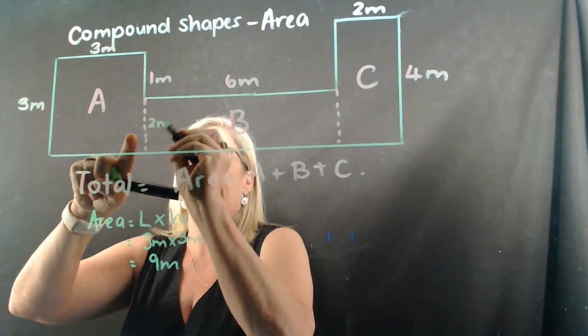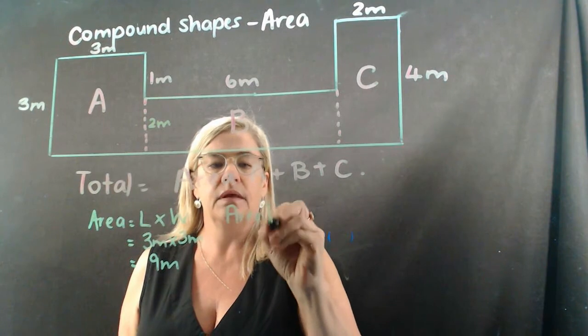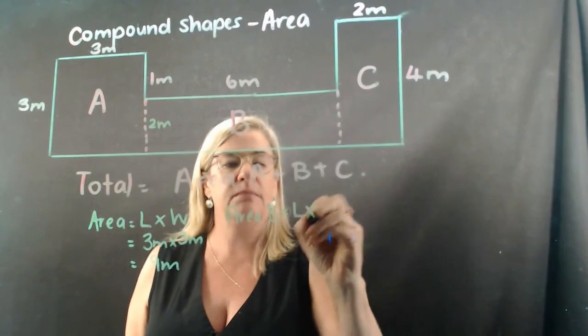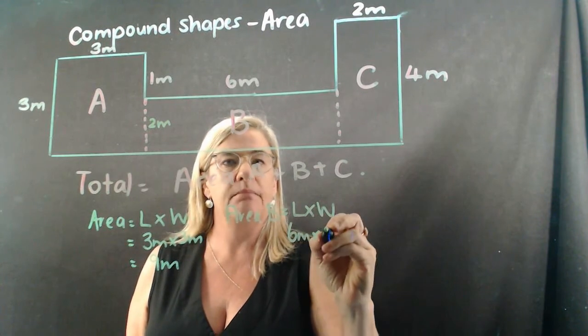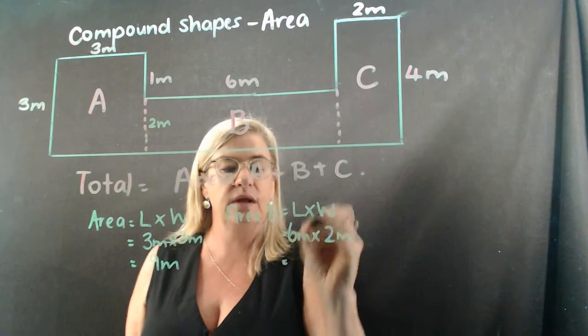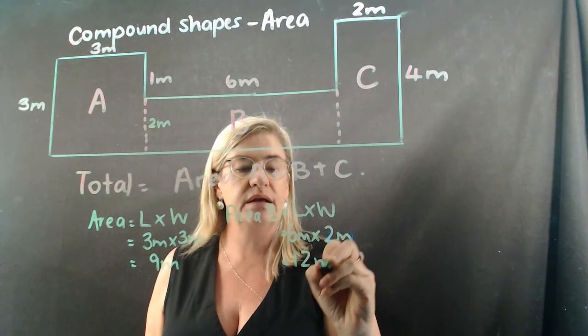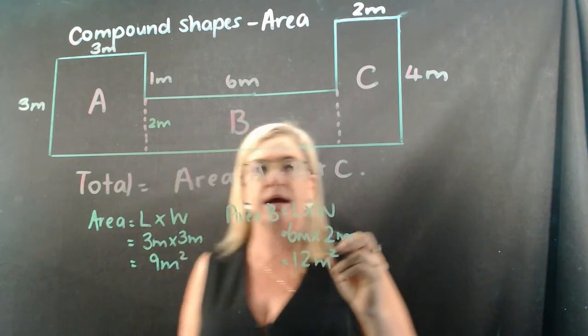So let's write that in there. So area B is going to be length multiplied by width, which is six meters multiplied by two meters. Let's have our equals all underneath one another. Six times two is twelve meters squared.